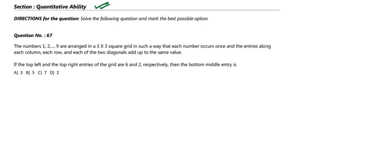Question 67 says: the numbers 1, 2, 3 and so on till 9 are arranged in a 3x3 square grid such that each number occurs only once, and the entries along each column, each row, and each of the two diagonals add up to the same value.